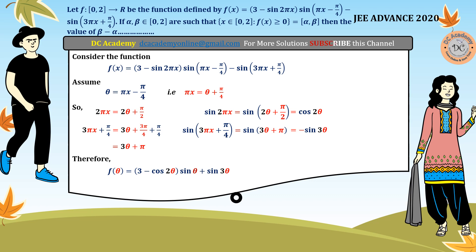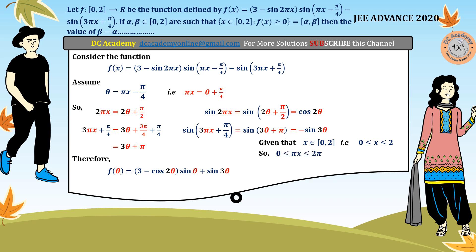The domain of f(x) is 0 to 2, meaning x lies between 0 and 2. Therefore, pi*x lies between 0 and 2*pi, and theta = pi*x - pi/4 gives the domain of theta as minus pi/4 to 7*pi/4. Hence our function is redefined in terms of theta.